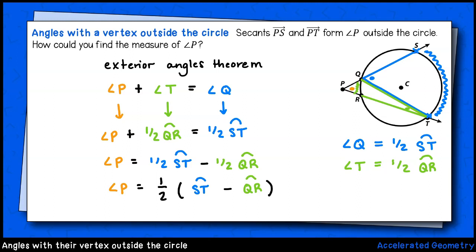We can tidy this up a bit and write it as P equals one-half times ST minus QR. So the measure of the angle formed outside the circle at vertex P will be one-half the difference between arcs ST and QR.